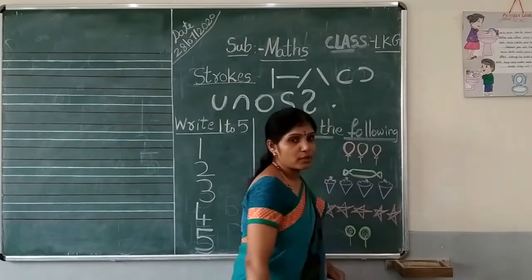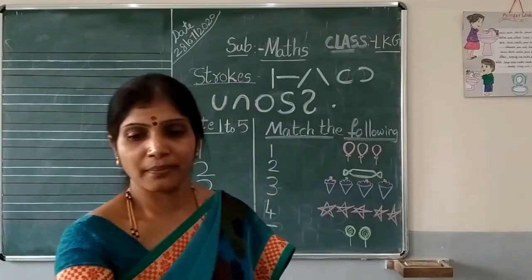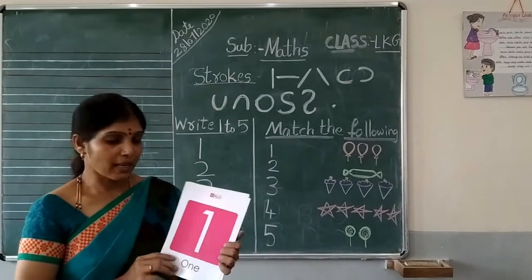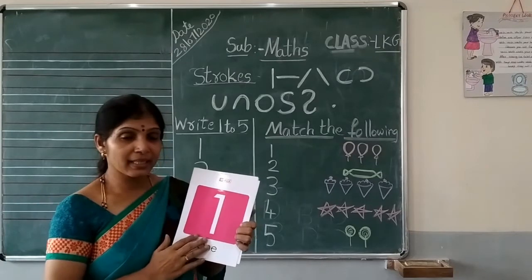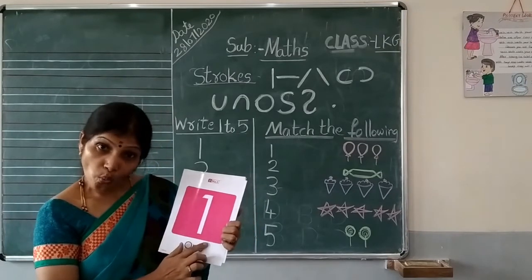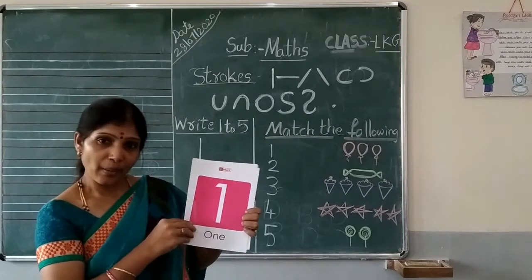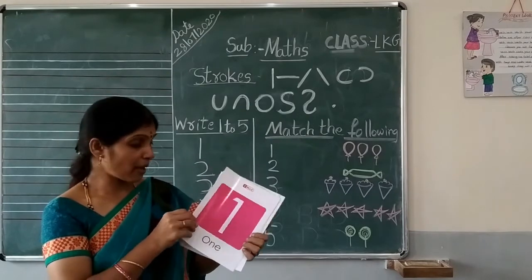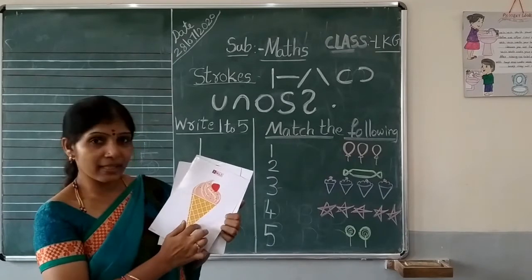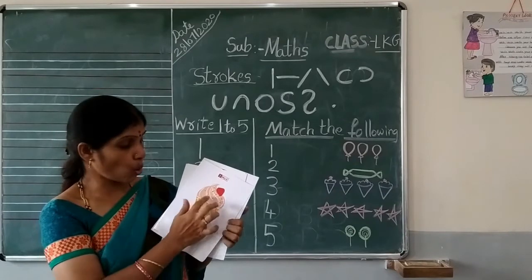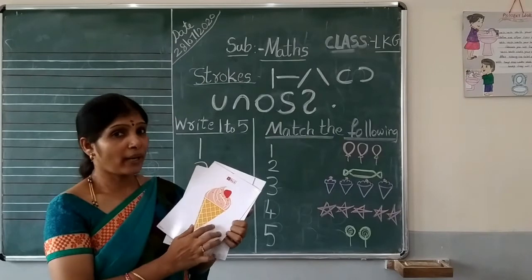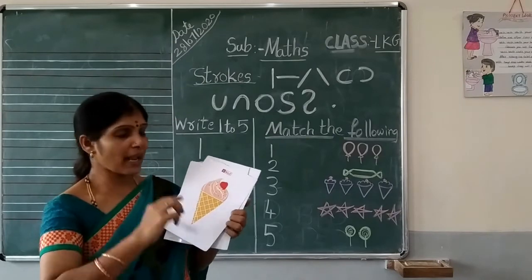Children, I will show some flashcards. Fifth objects. Children, which number is? Yes, this is number 1. Which number? Number 1. See children, what is this? This is 4 ice cream. How many are here? Only 5 ice cream.